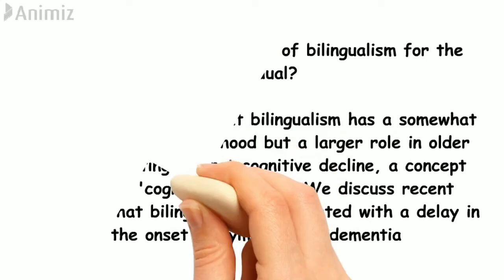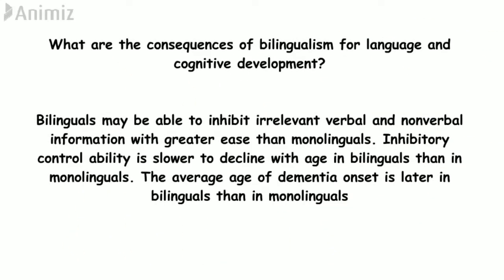Regarding consequences for language and cognitive development, bilingualism may allow individuals to inhibit irrelevant verbal and non-verbal information with greater ease than monolinguals. Inhibitory control ability is also slower to decline with age in bilinguals than in monolinguals, and the average age of dementia onset is larger in bilinguals. This is because using two languages simultaneously exercises the brain's capacity more than a single language does, helping the brain grow comparatively more.